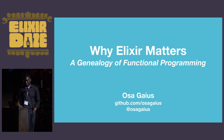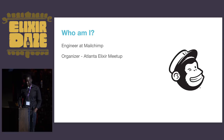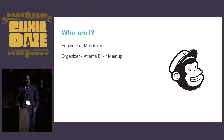By way of introductions, my name is Osa Gaius. I work at a company called MailChimp in Atlanta — that's a marketing automation platform for small businesses. While at MailChimp I use PHP rather than Elixir, but previously in my career I used Elixir for quite some time.